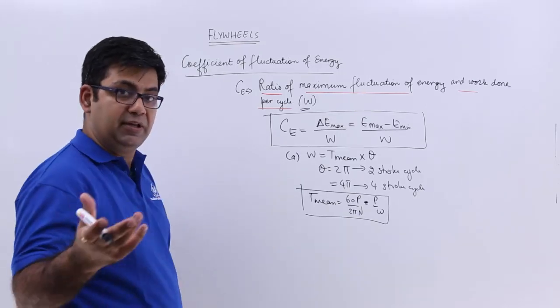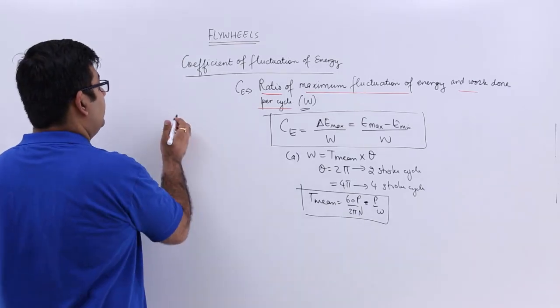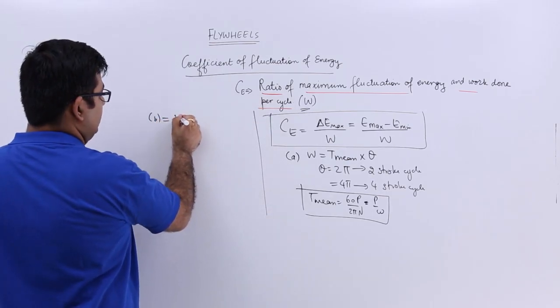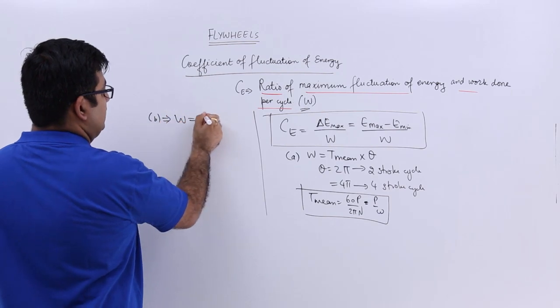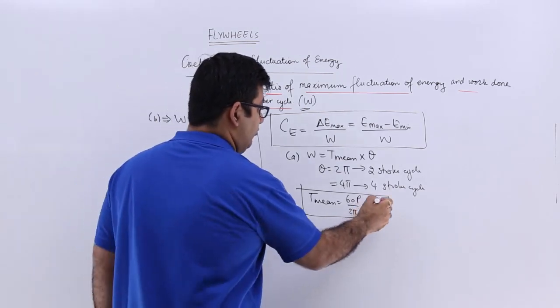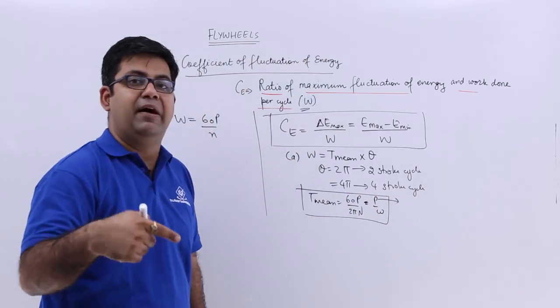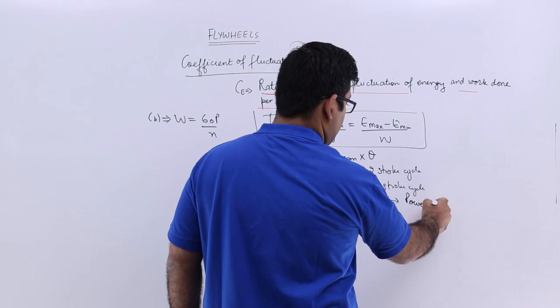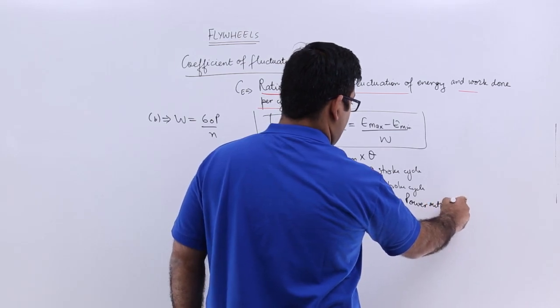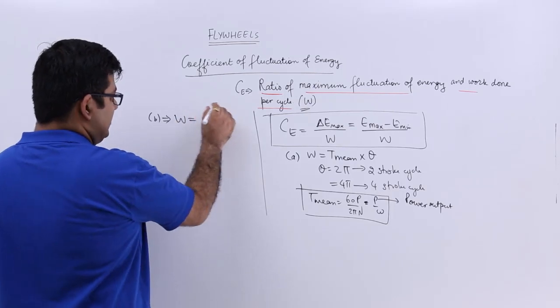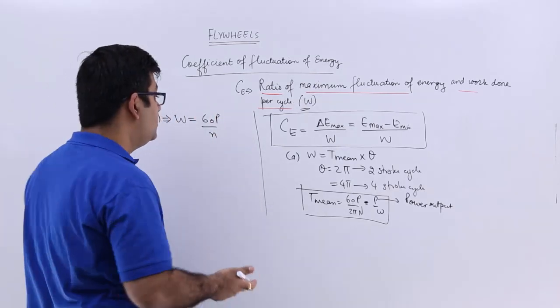The next method to calculate the work done per cycle is this: that is 60P upon n, where P, if you're just getting confused, is the power produced per cycle. So again, 60P upon n, this is the power output. So again, 60P upon small n. What is this small n?